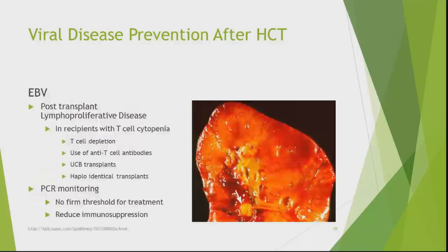For EBV, the big concern is post-transplant lymphoproliferative disorder. Who gets it? Patients with T-cell depletion — those given T-cell antibodies such as anti-thymocyte globulin. Who receives that? Patients getting umbilical cord or haploidentical transplants, because they're at higher risk for GVHD. Management involves PCR monitoring. What do you do when levels are elevated — a hundred, a thousand, tens of thousands? Generally, I say tens of thousands, but always take it in clinical context. Treatment: reduce immunosuppression if possible. If not possible, you may need to use rituximab.